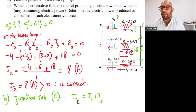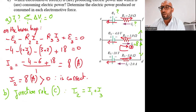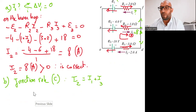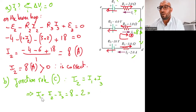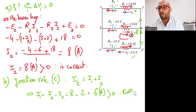The sum of the currents entering the junction equals the sum of the currents leaving — we're talking about algebraic sum. Therefore, I1 equals I2 minus I3, which is 8 minus 2, giving I1 equals 6 amperes. Since I1 is a positive quantity, the direction shown in the figure is correct.